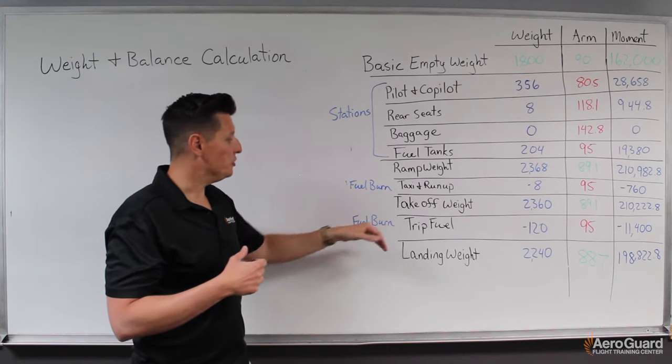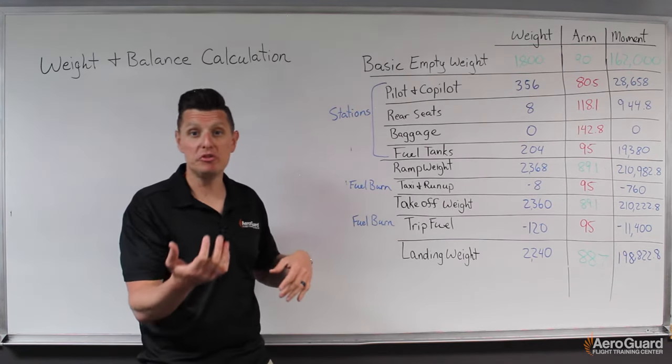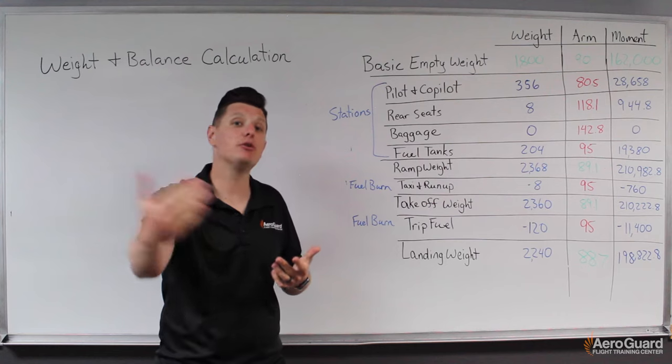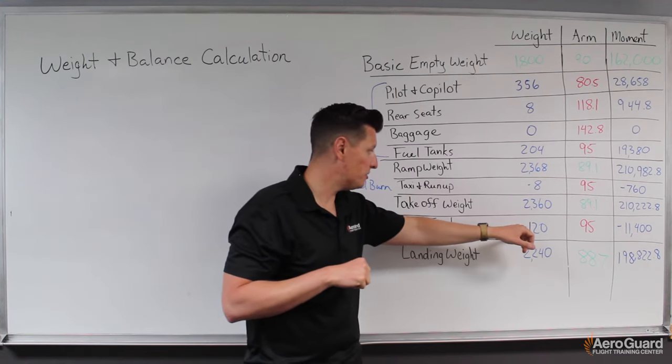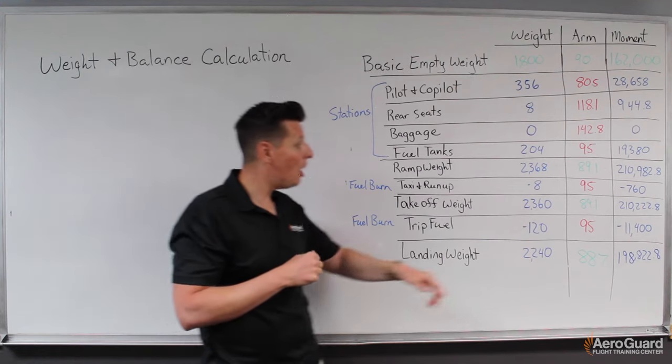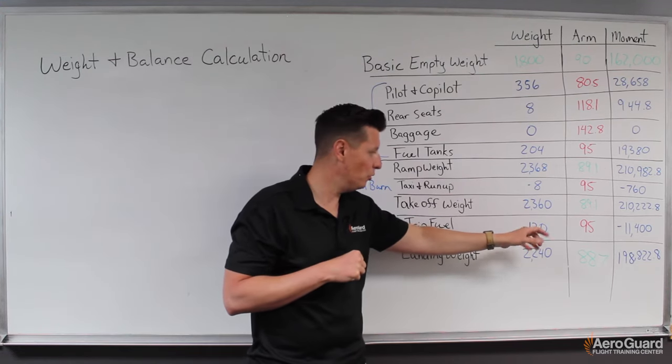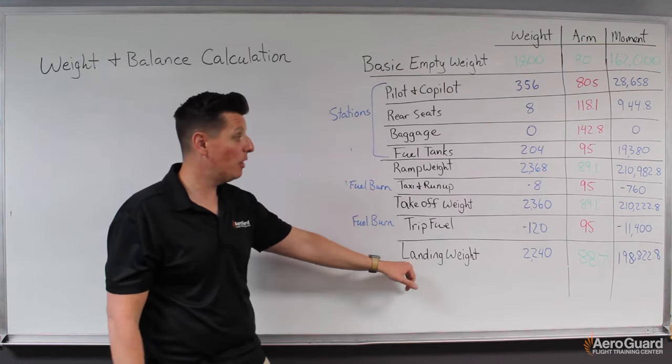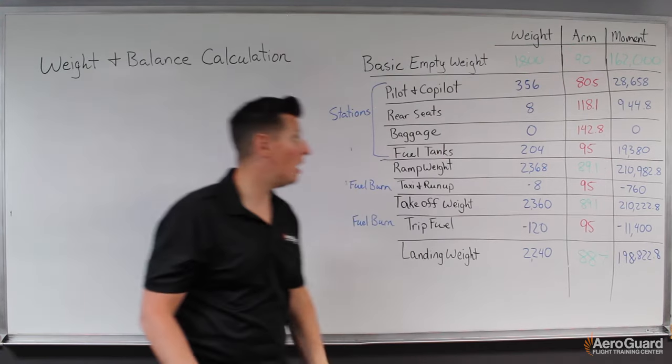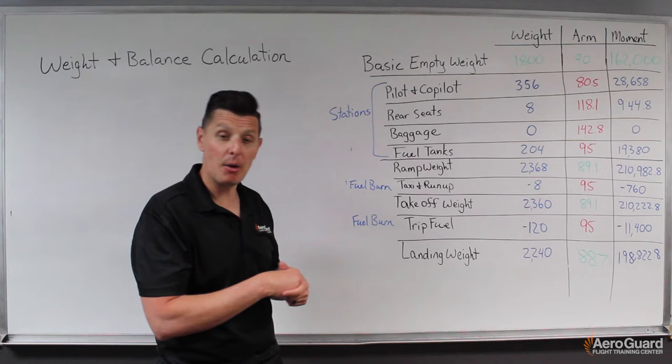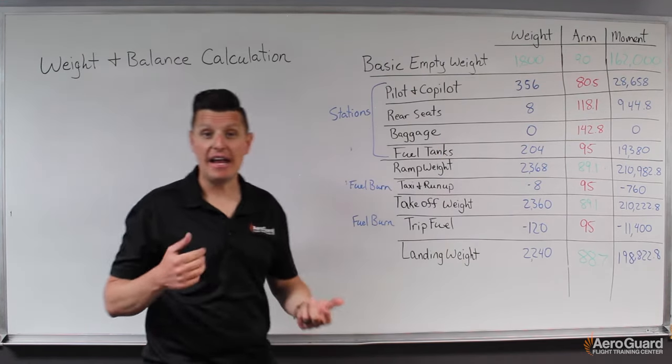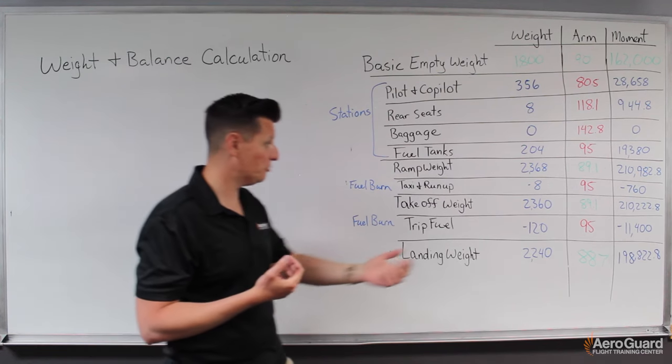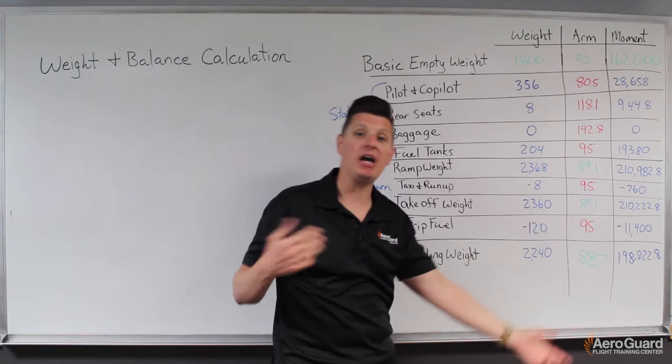Then we need to subtract the trip fuel. If we assume approximately 20 gallons of fuel will be used for this trip, multiplied by six pounds per gallon, that gives us about 120 pounds of fuel that we'll burn off during the flight. We subtract that to get our landing weight and landing moment, so we can determine our landing center of gravity. Once again, the CG has moved, which makes sense because we're taking weight away from a position behind the center of gravity.